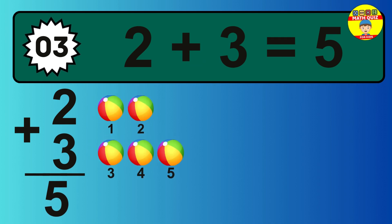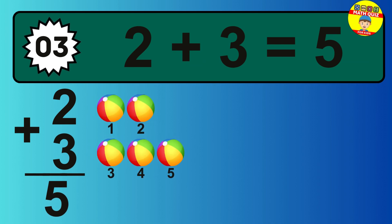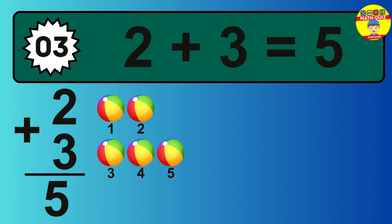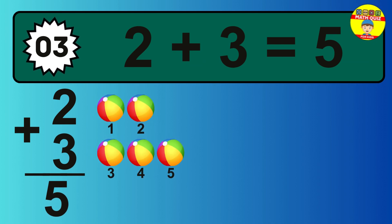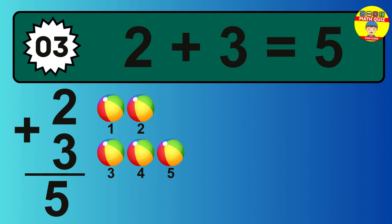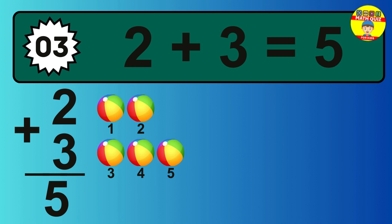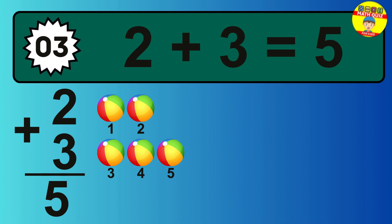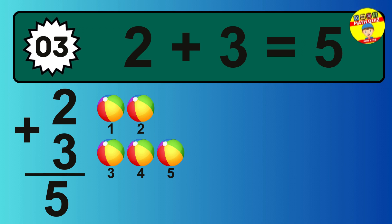So the answer is 2 plus 3 is 5. Let's count it: 1, 2, 3, 4, 5.